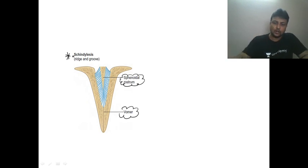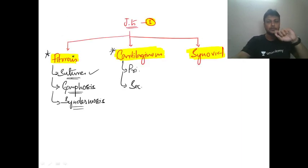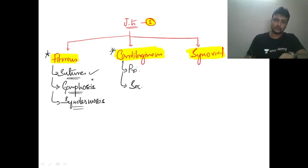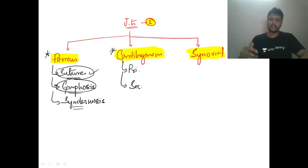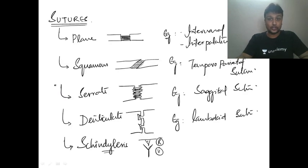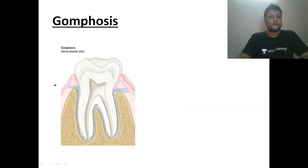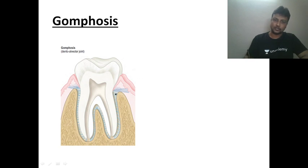We are done with sutures. Now let's deal with gomphosis — it's the easier one. Gomphosis is the joint between the tooth and the socket, connected with the help of the periodontal ligament. It is an immovable fibrous joint.